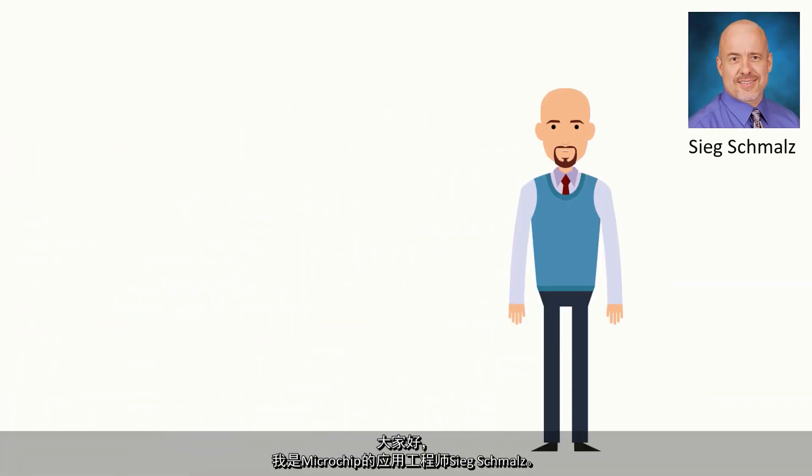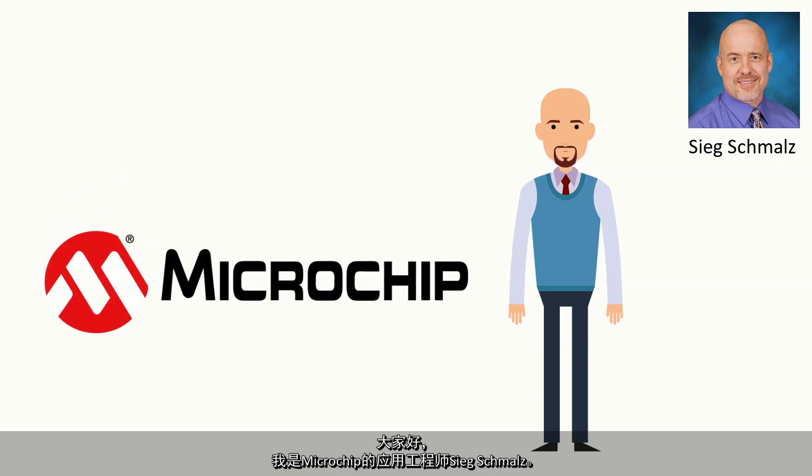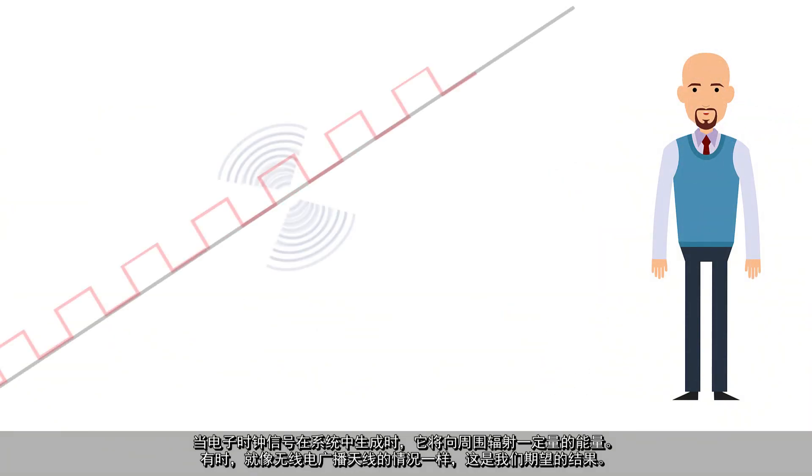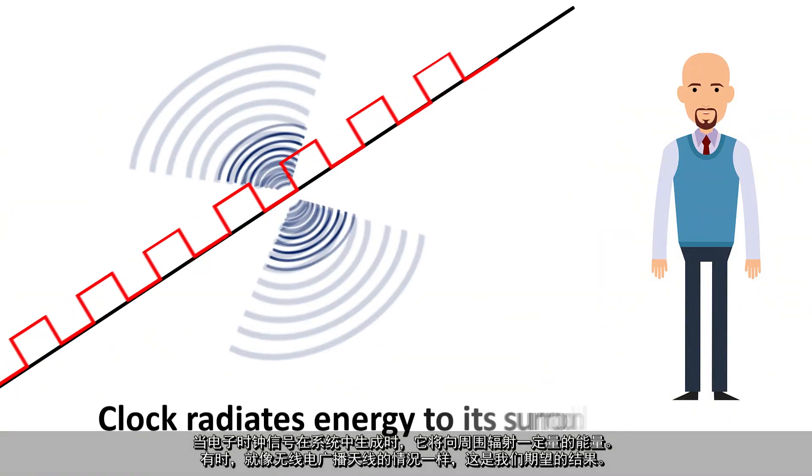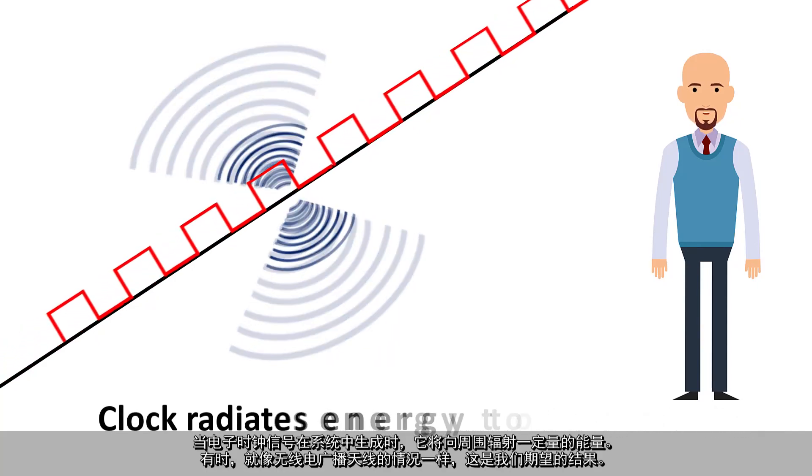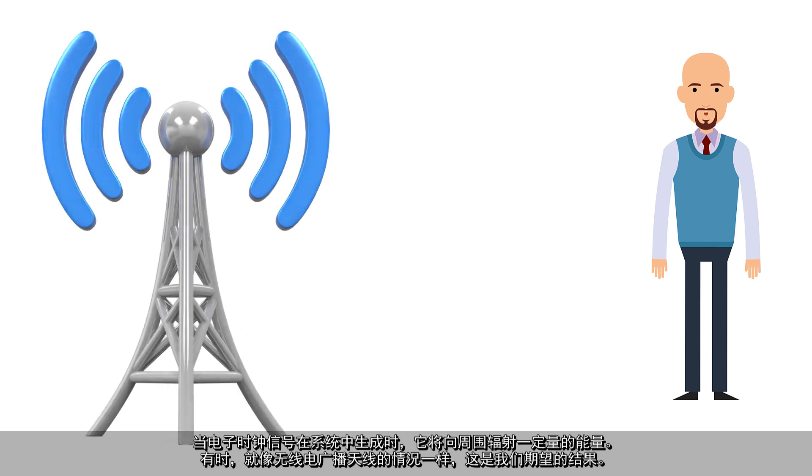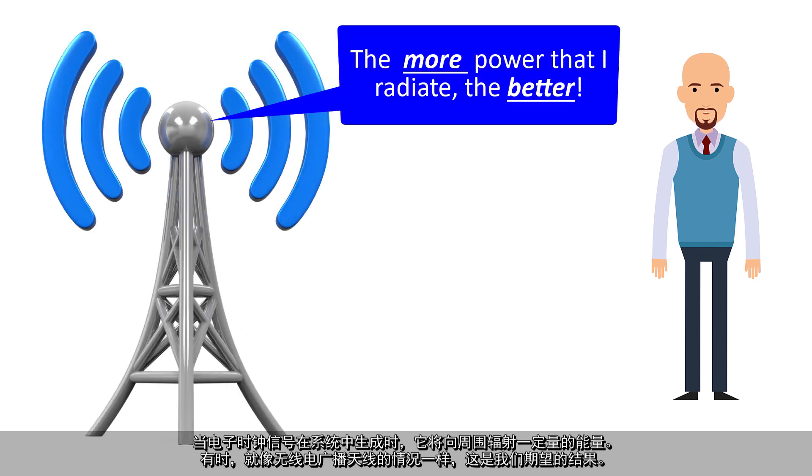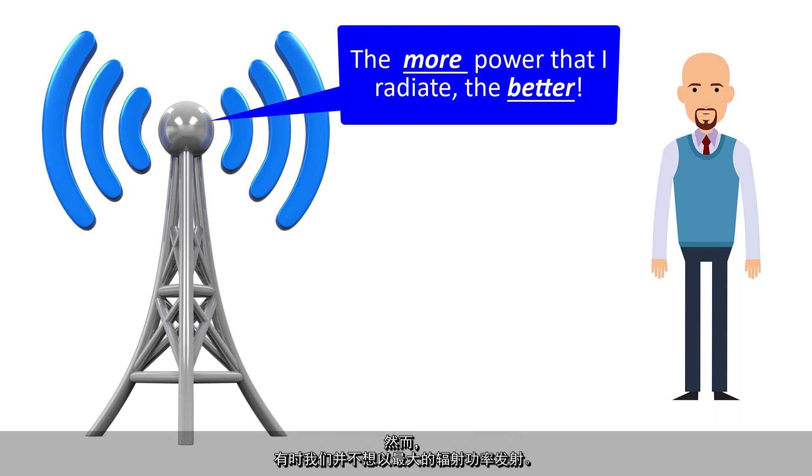Hi, this is Sieg Schmalz, Applications Engineer at Microchip Technology. When an electrical clock signal is generated in a system, it will radiate a certain amount of its energy into its surroundings. Sometimes, as is the case for a broadcast radio antenna, this is the desired result. However, there are times when we do not want to transmit with the maximum radiated power.